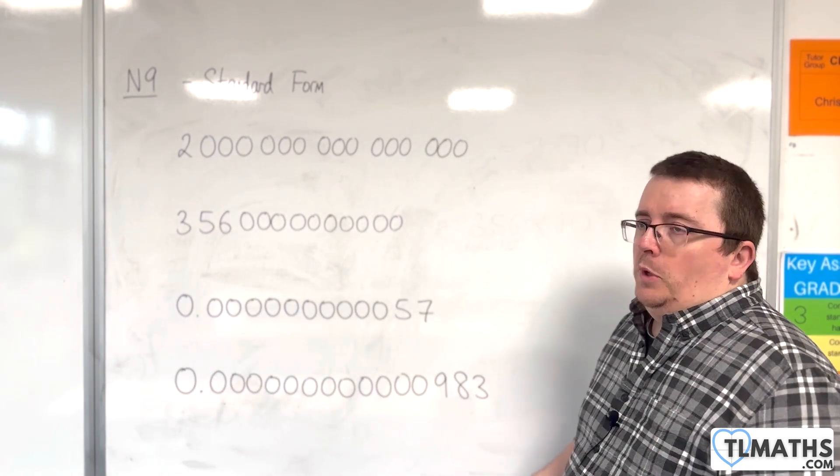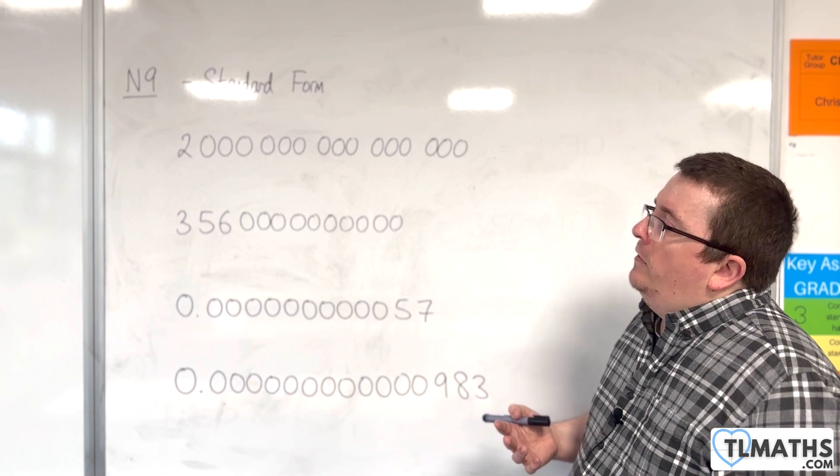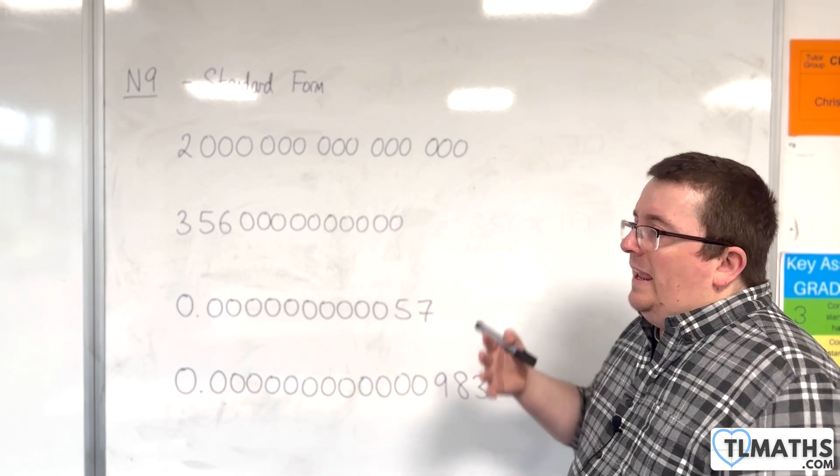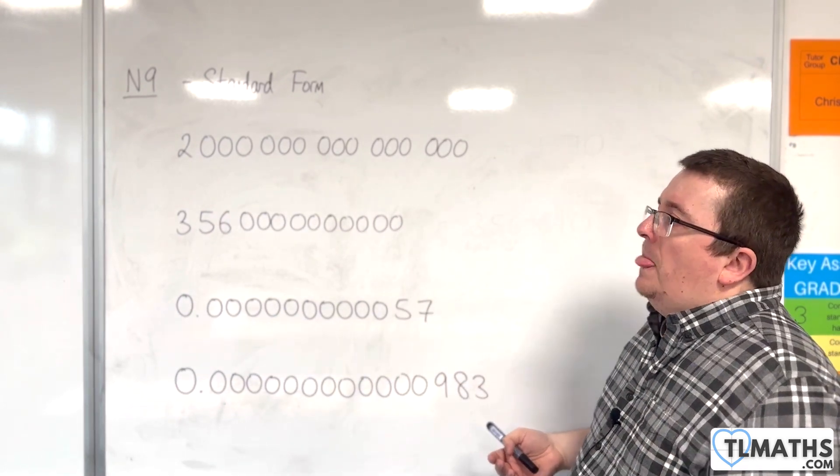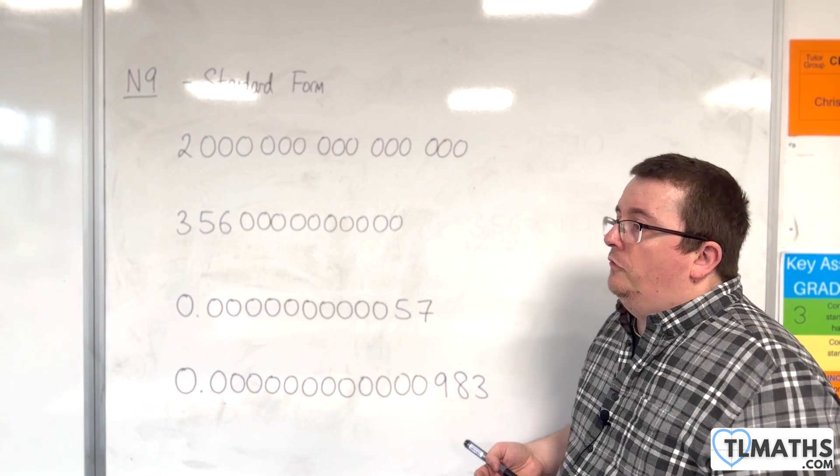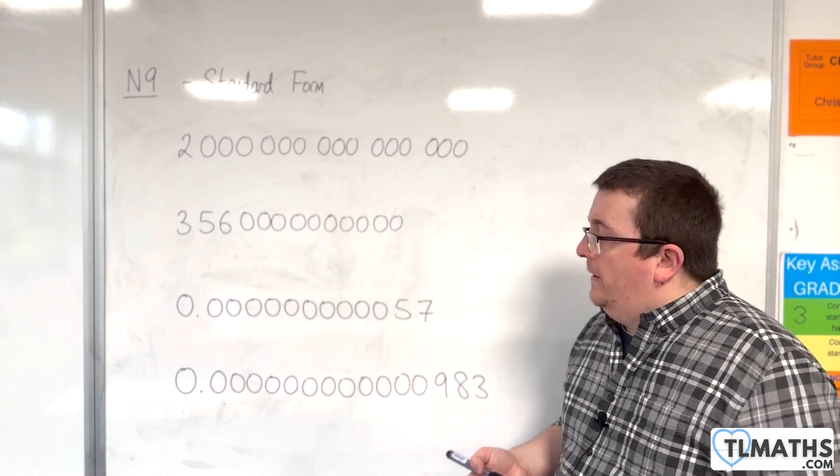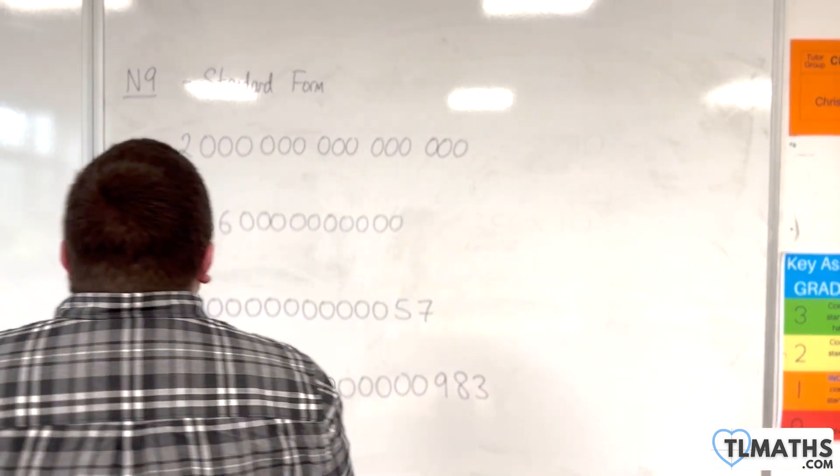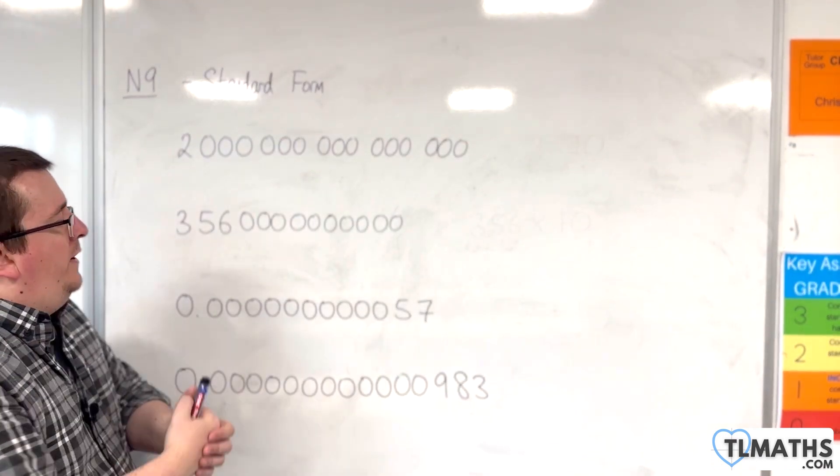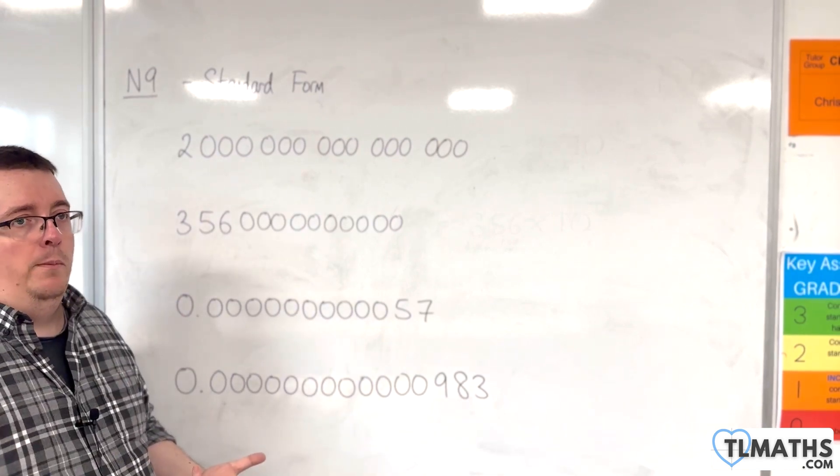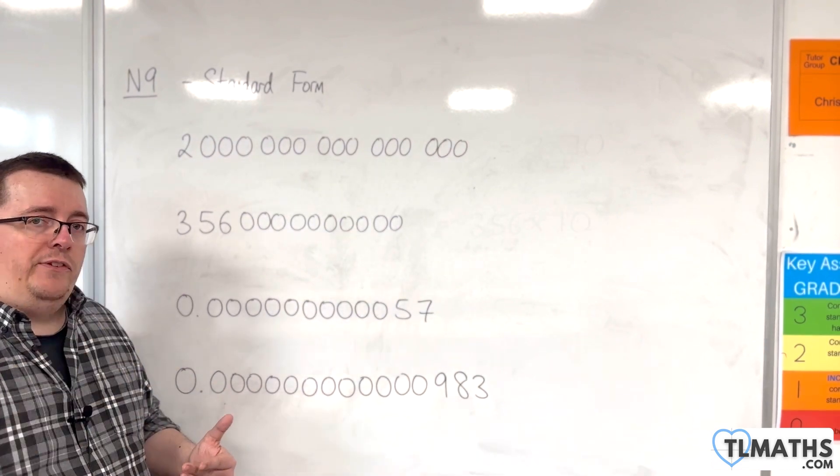Especially if you're talking about maybe the distances between stars, for example, then I would be able to very quickly show one star is closer to another. Or it could be the relative sizes of different sized atoms and electrons and things like that. It's quite often used in physics, biology, chemistry. So is there a way that I could write these in an equivalent form? We refer to this as standard form.